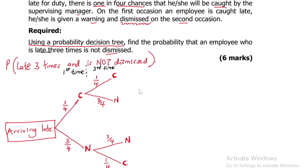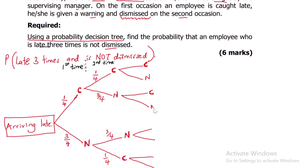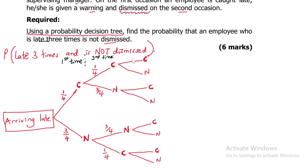They're telling us three times, so we're going to extend this one more time for the third time. Out of each possibility, you can either be caught or not caught - still two possibilities at each branch. If you're caught it is one out of four chances; if not caught it is three quarters. This applies to all four branches extending into the third time.